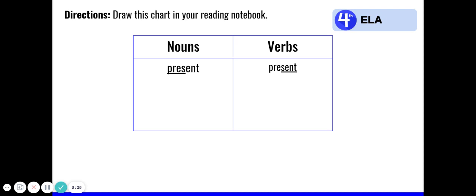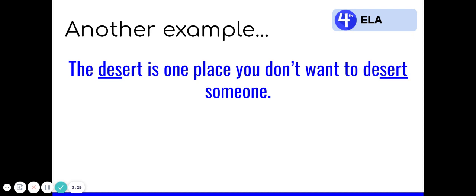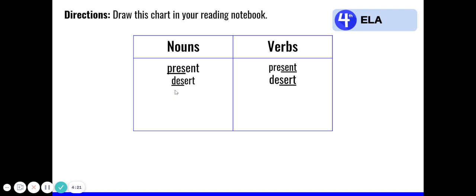Okay, let's look at another example. The desert is one place you don't want to desert someone. The homographs in this sentence are desert and desert. Which one do you think is the noun and the verb? Let's see. The desert is a place. A very dry, hot place. So that's our noun. And desert is a very hot place we don't want to be left in, which is what desert means. We don't want to leave them there. That's an action, and so that is a verb. Notice I've underlined the syllable that is accented in those homographs. Let's add these two to our chart. Remember to underline the accented syllables, just like I have it.